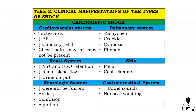Skin may be pallor, cool, and clammy. Neurologic system: decreased cerebral perfusion that may lead to anxiety, confusion, and agitation. Gastrointestinal system: decreased bowel sounds, nausea, and vomiting.